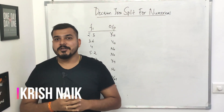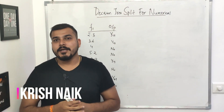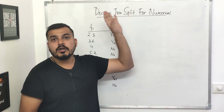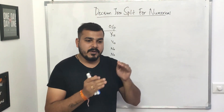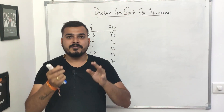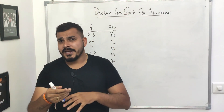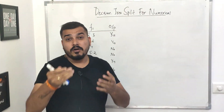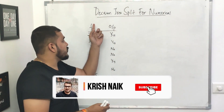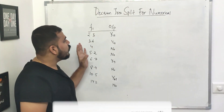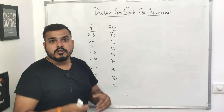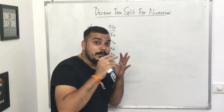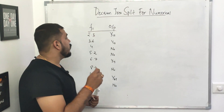Hello, my name is Krish Nayak and welcome to my YouTube channel. Today in this video we'll try to understand how the decision tree split happens for numerical variables. In my previous video I already showed this with respect to categorical variables, where we discussed entropy and information gain.